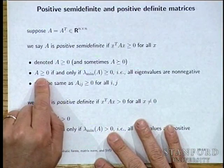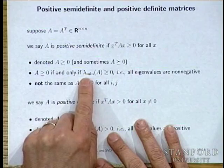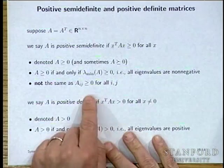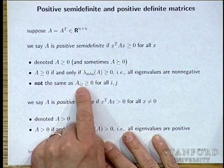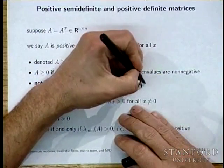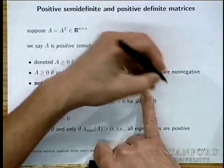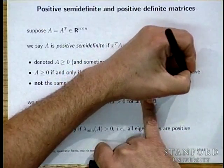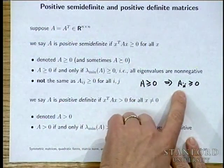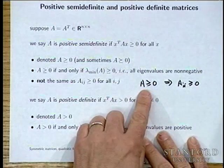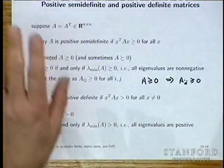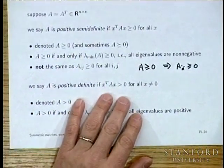A matrix is positive semi-definite if and only if the minimum eigenvalue is non-negative — all eigenvalues are non-negative. This is absolutely not the same as the elements of the matrix being non-negative. If A is positive semi-definite, then its diagonal entries are non-negative (since A_{ii} = e_i^T A e_i), but the off-diagonal elements can have any sign.